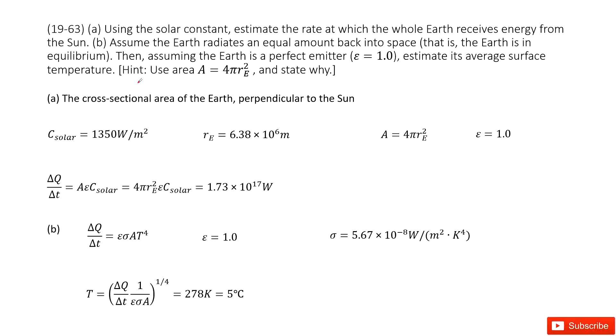So we can see we have a solar constant, it is given. You can check your textbook. We need to find the rate at which the whole Earth receives energy from the Sun. This energy from the Sun is the solar energy, the solar emitted energy.